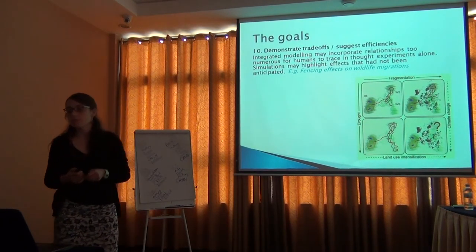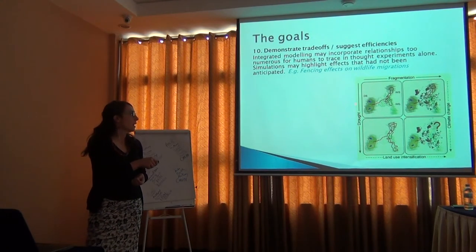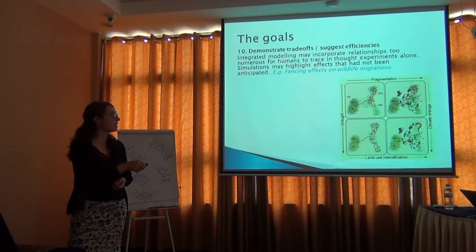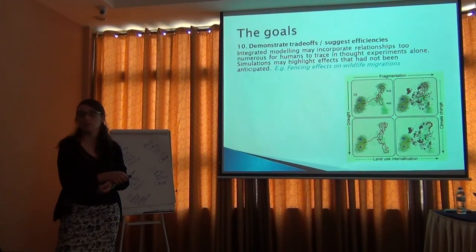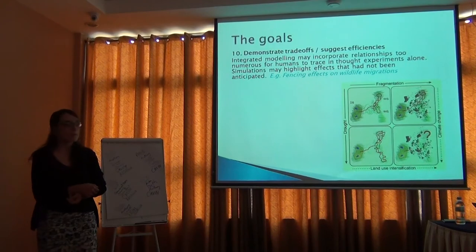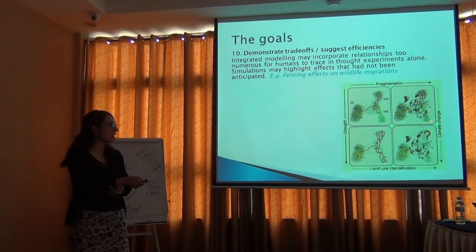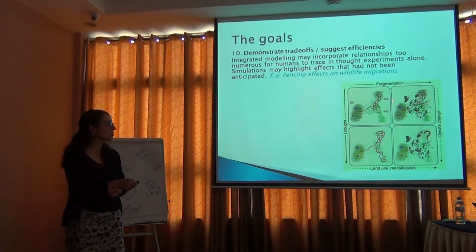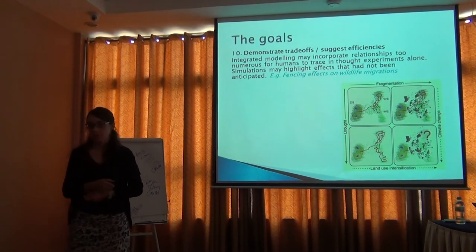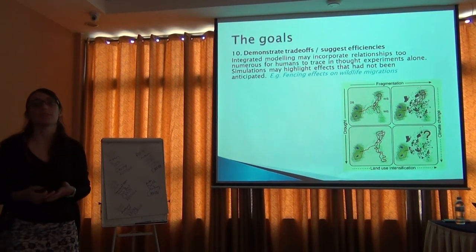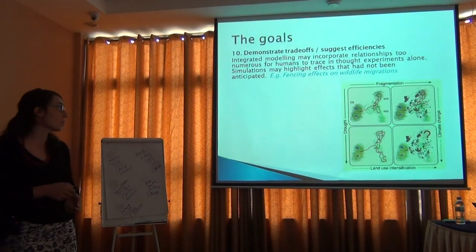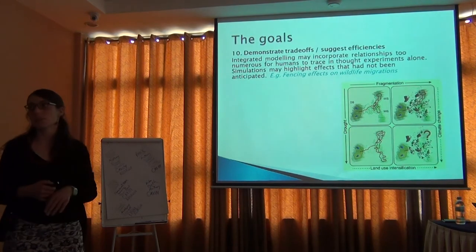Another thing we can do with modeling is see trade-offs. For example, in an area with droughts, animals like zebra go around and find grass in other areas, but prefer to live near water. What would happen if we start fencing the land? How will these animals move? Instead of doing the expensive experiment of putting fences and tracking zebra, we can use a couple of tagged zebras and modeling to see where the others are likely to go.